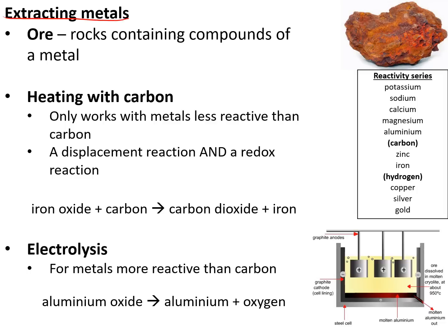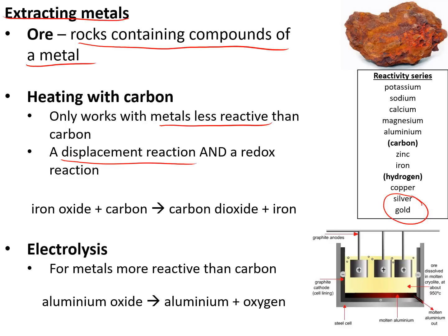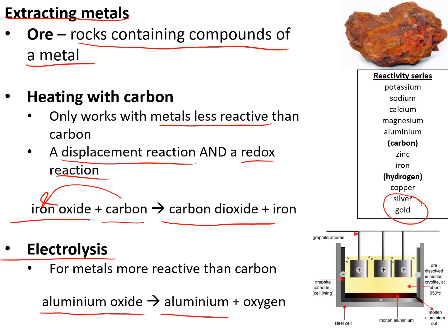Metals are not found naturally in their raw state but are found in rocks called ores, which contain compounds of the metal. Only silver and gold are found in their pure state. We can extract metals by heating them with carbon — this only works with metals less reactive than carbon, and it is both a displacement and a redox reaction. For example, iron oxide and carbon make carbon dioxide and iron — the iron oxide is reduced and the carbon is oxidised. Metals more reactive than carbon cannot be extracted by heating with it, so we use electrolysis — for example, aluminium oxide must be electrolysed, melting it first in a large electrolytic cell.